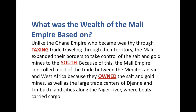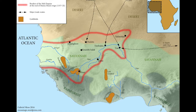By doing that, the Mali Empire ended up controlling most of the trade between the Mediterranean and West Africa, because they owned the salt and gold mines as well as the large trade centers — the huge cities of Djenné and Timbuktu, and other cities along the big bend in the Niger River, where boats carried cargo between cities. By controlling the trade centers, the trade routes, and the mines themselves, they controlled the entire economy of the region.